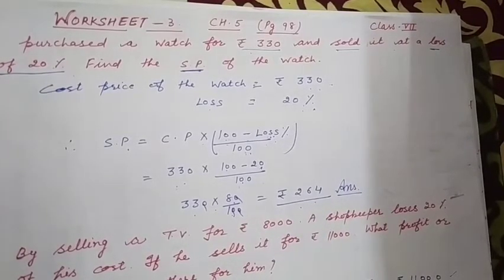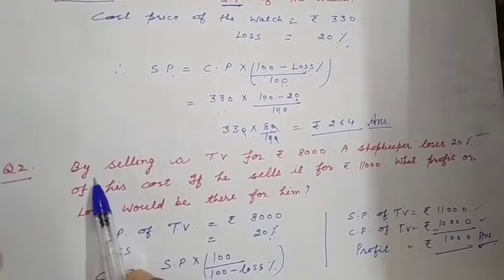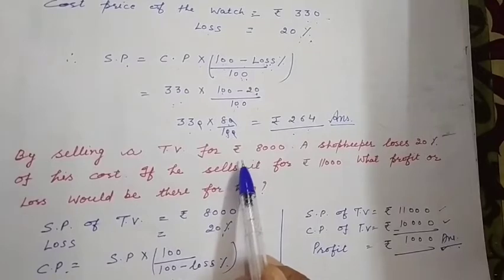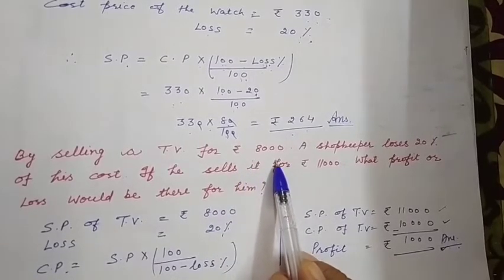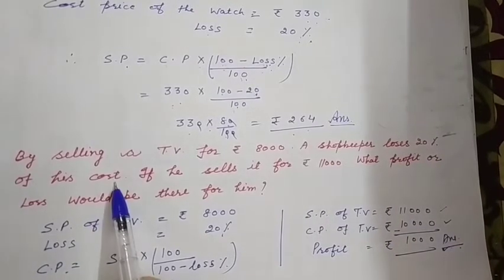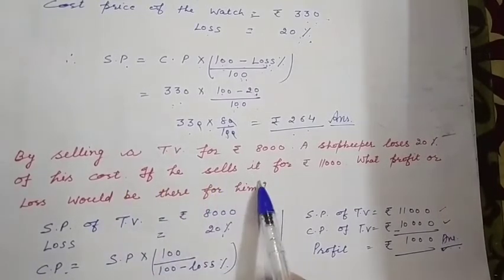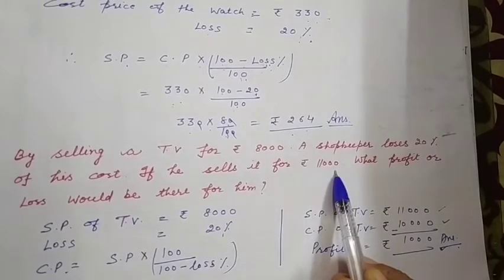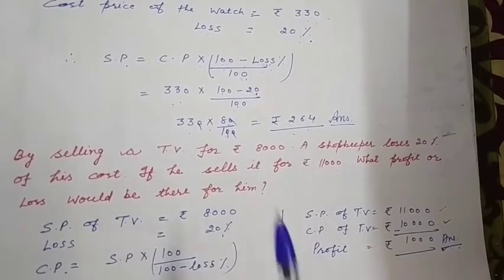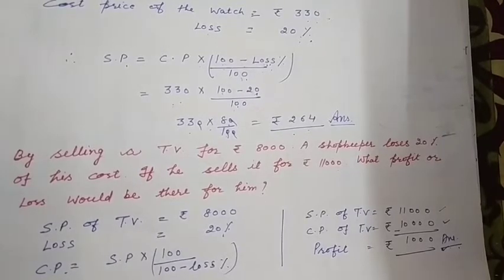Question number 2: By selling a TV set for rupees 8,000, a shopkeeper lost 20% of his cost. If he sells it for rupees 11,000, what profit or loss would there be for him?